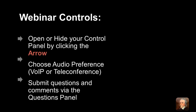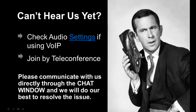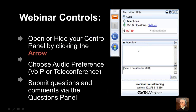There are two windows that will allow you to access important functions for the webinar. The first is the sidebar menu, and the second is the control panel. You can open or hide the control panel by clicking the arrow icon at the top of the sidebar menu. When open, the control panel contains two sections: audio and questions. Voice over IP settings can be accessed by clicking on settings, and you can switch between voice over IP or teleconference listening modes at any time.